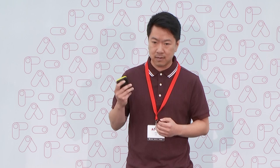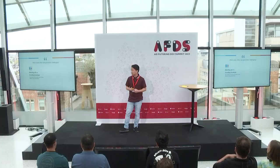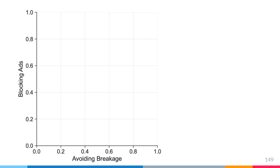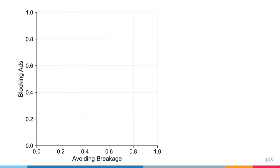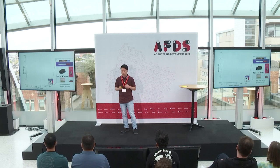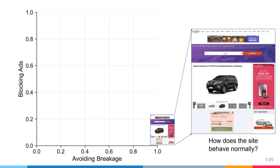Filter rule generation is challenging due to this inherent tradeoff between blocking ads and avoiding breakage. To illustrate this challenge, let's take a look at this tradeoff plot. The y-axis shows how well we blocked ads, one meaning we blocked all ads. The x-axis shows how well we avoided breakage, one meaning there's no breakage. So a site normally behaves in this bottom right corner when there are no filter rules applied — no ads blocked and no breakage.